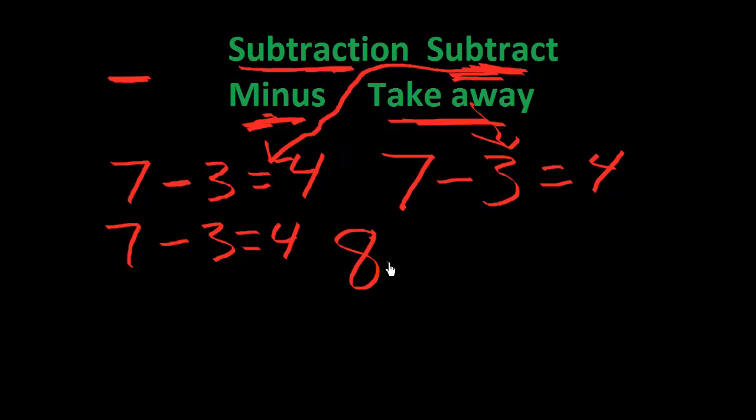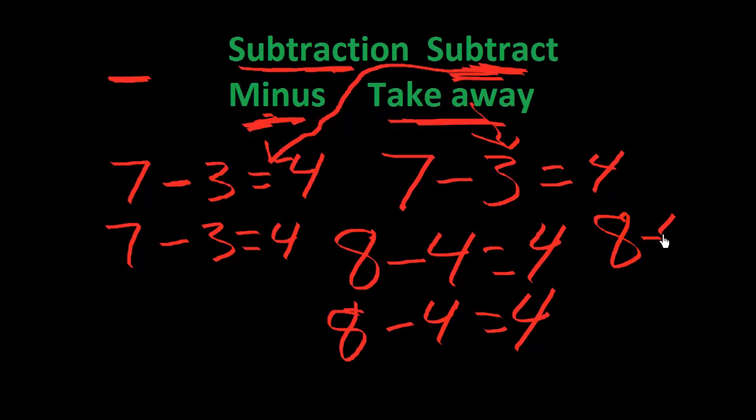8 minus 4 equals 4. Or 4 take away 8, or I'm sorry, 8 take away 4 equals 4. Or subtract 4 from 8. So 4 from 8 and that equals 4. Subtract 4 from 8.